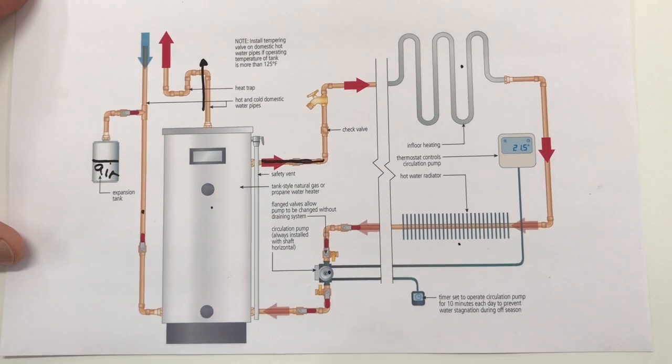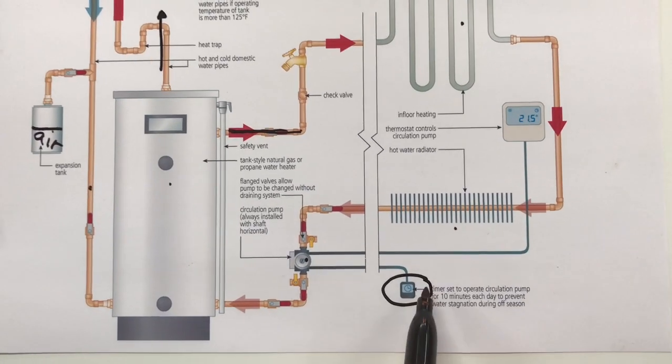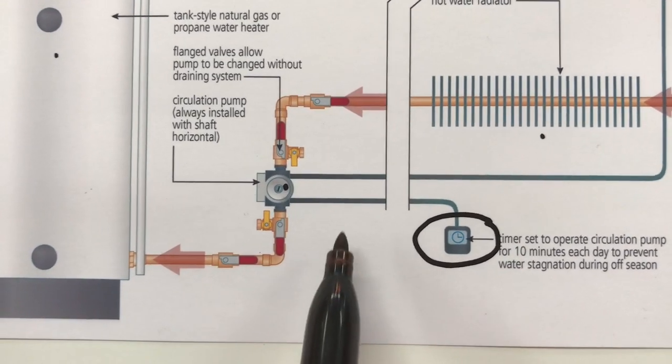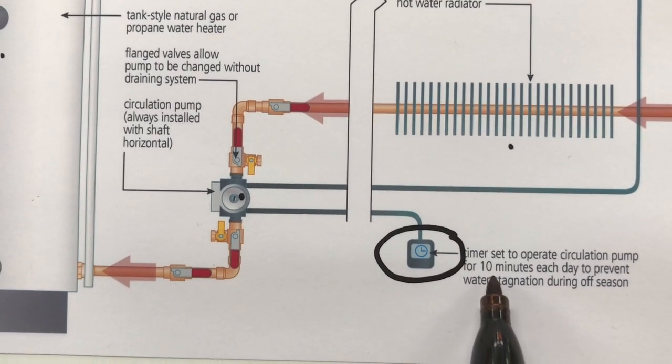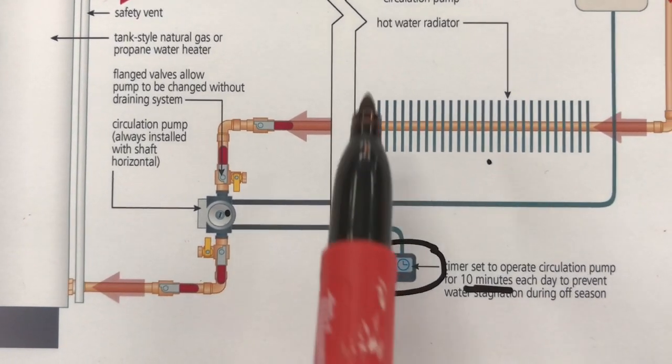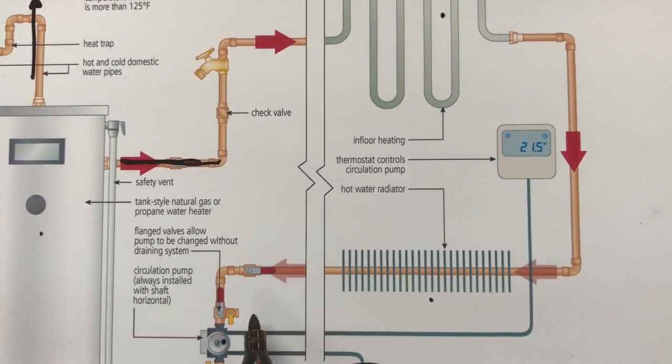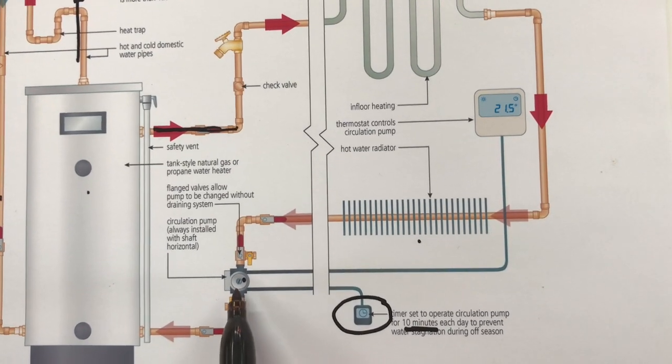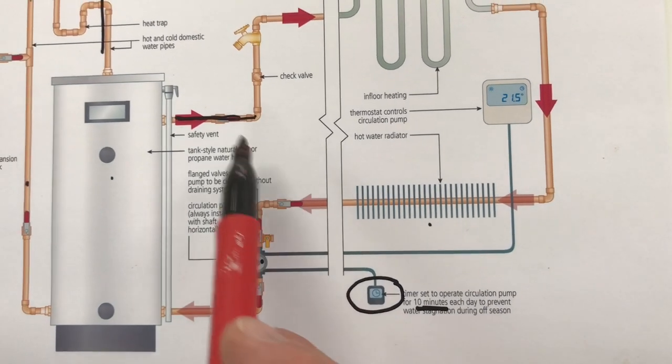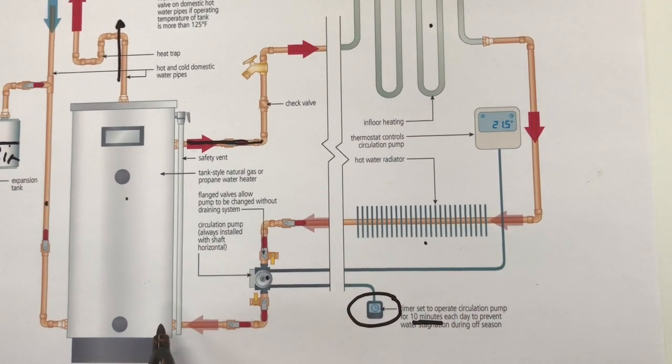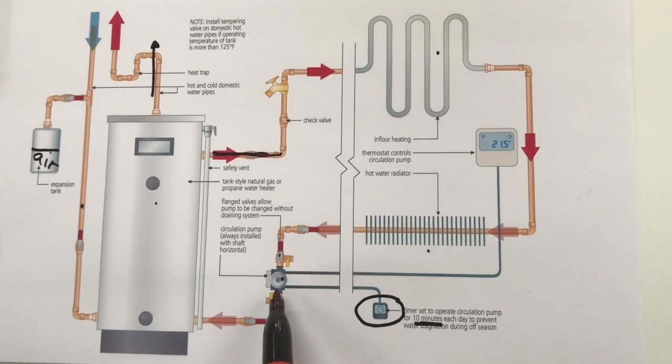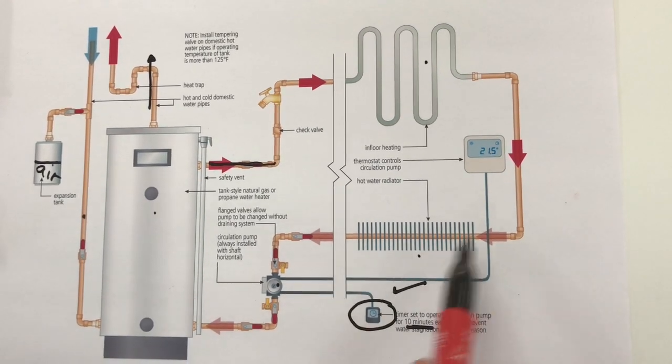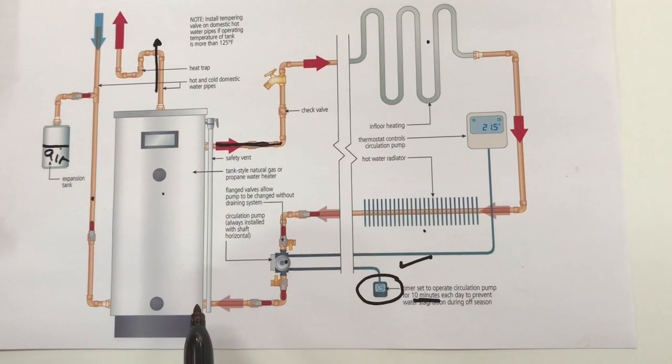One way around the stagnation problem is to wire in a timer like you see here. Now this will activate the circulator pump whether heat is called for or not for about 10 minutes each day. And that serves to move the water through the hydronic system long before it would ever get stagnant. It's actually good for the pump for it to run regularly like that even in the off season. And some jurisdictions will say yes that's okay.